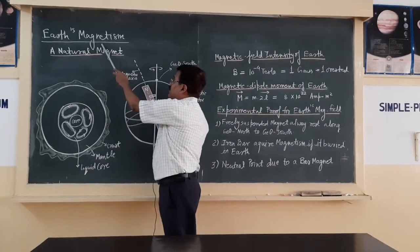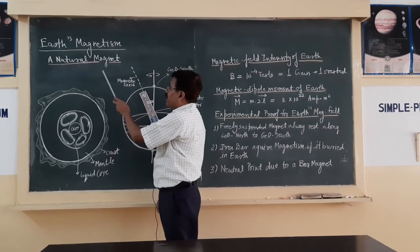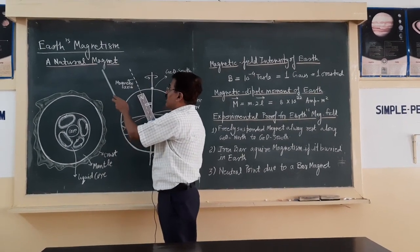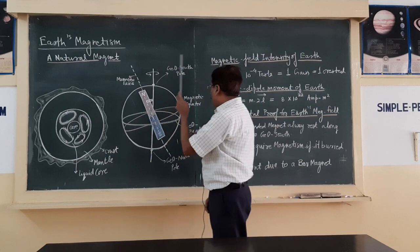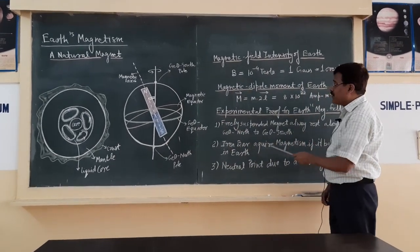Earth magnetism: our earth behaves like a magnet, a natural magnet, a very huge magnet. For earth magnetism, there are certain experimental proofs.